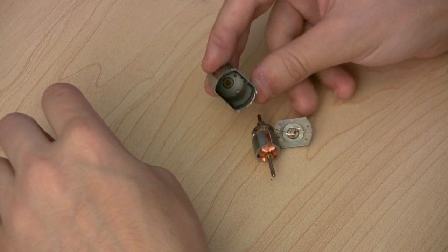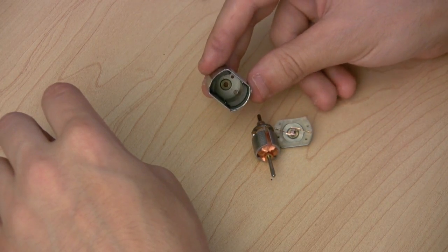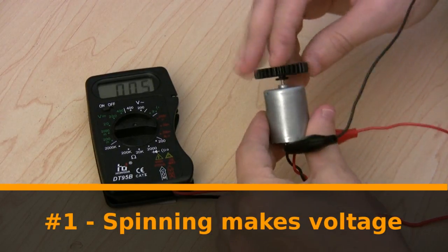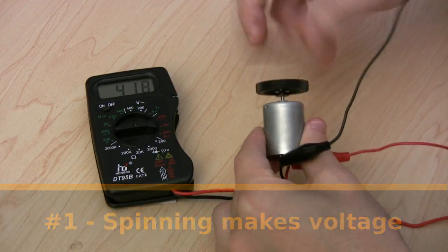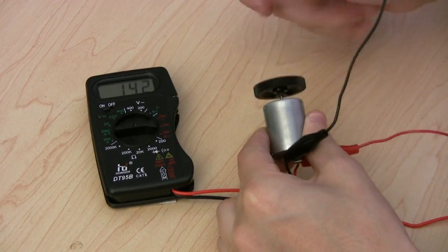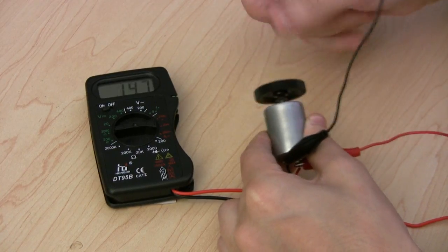Here are a few experiments and observations that you should really try for yourself. Observation number one: When I spin it by hand, I get a voltage. Guess what? This is how a generator works. This voltage is called the back EMF, and it's proportional to the speed.